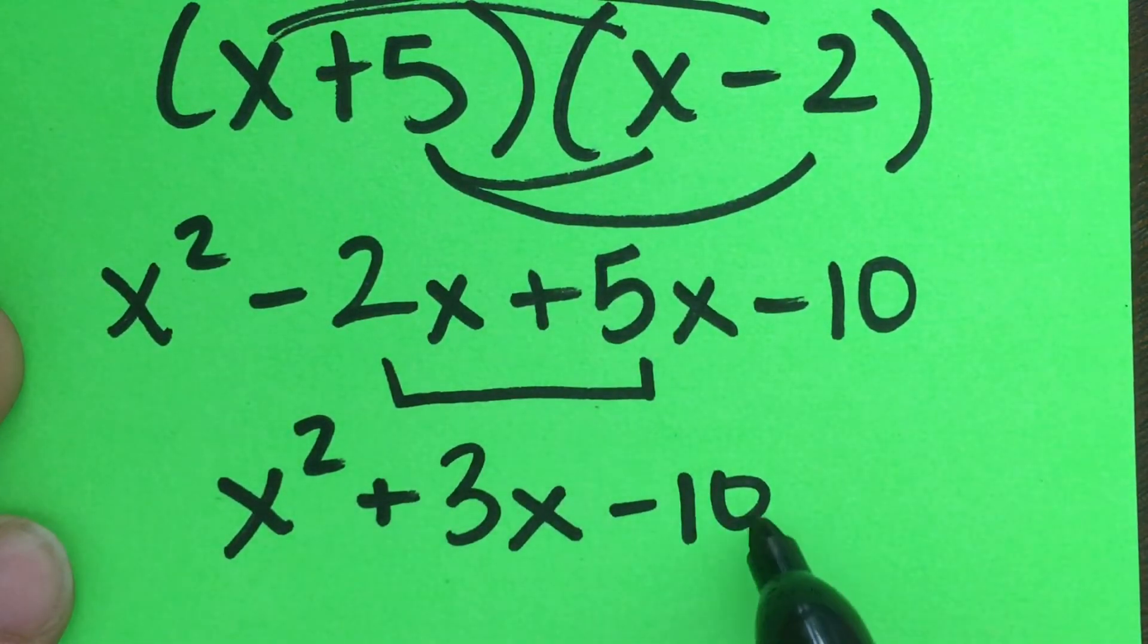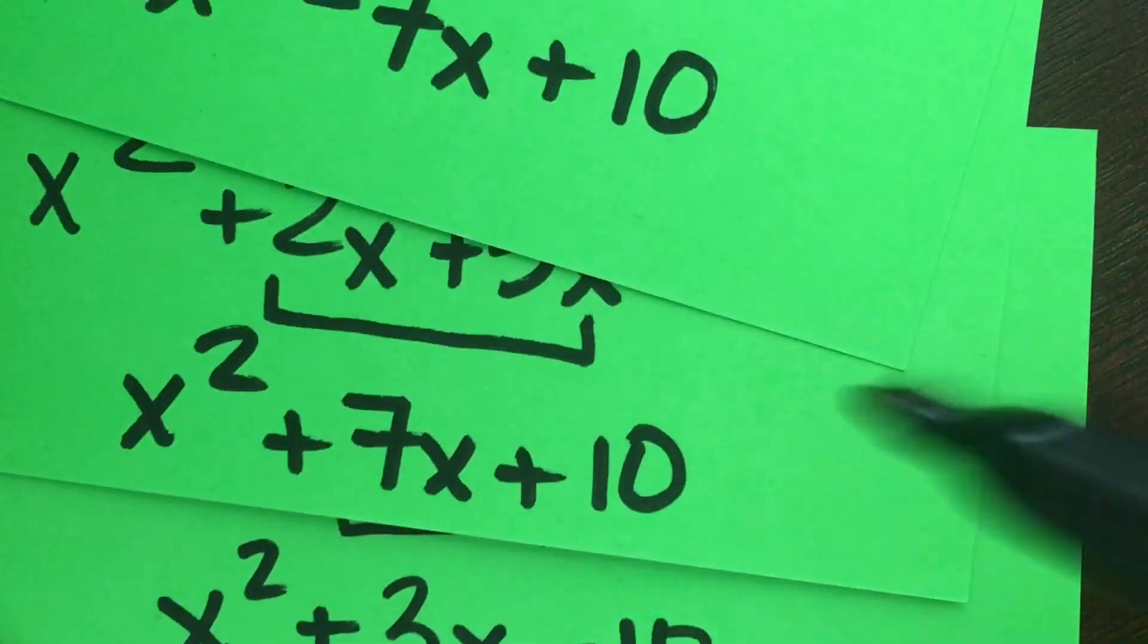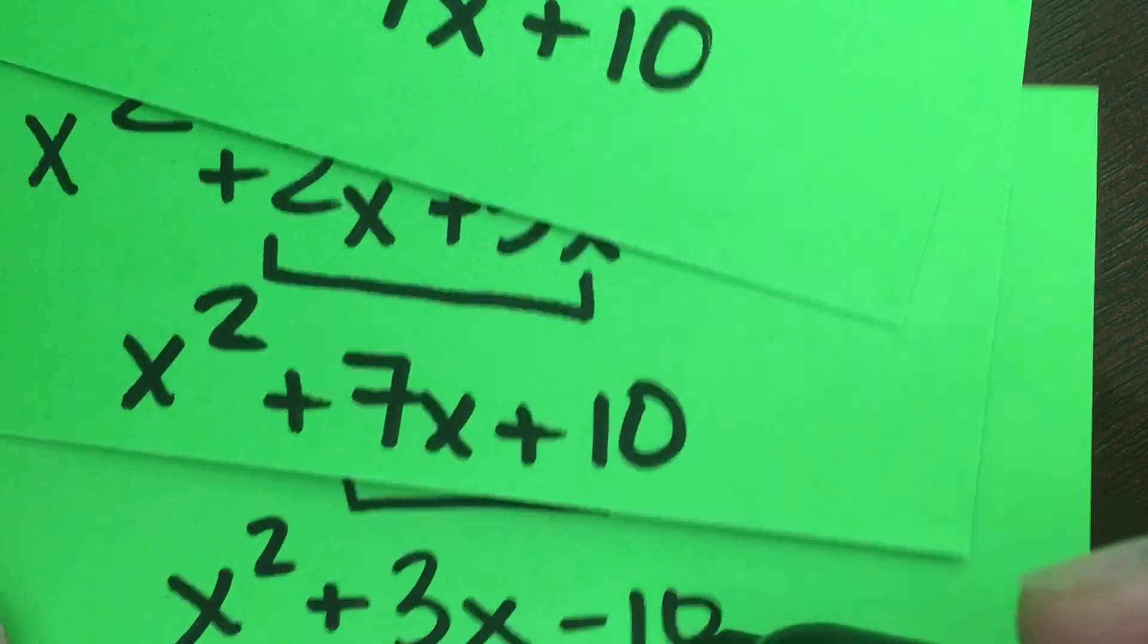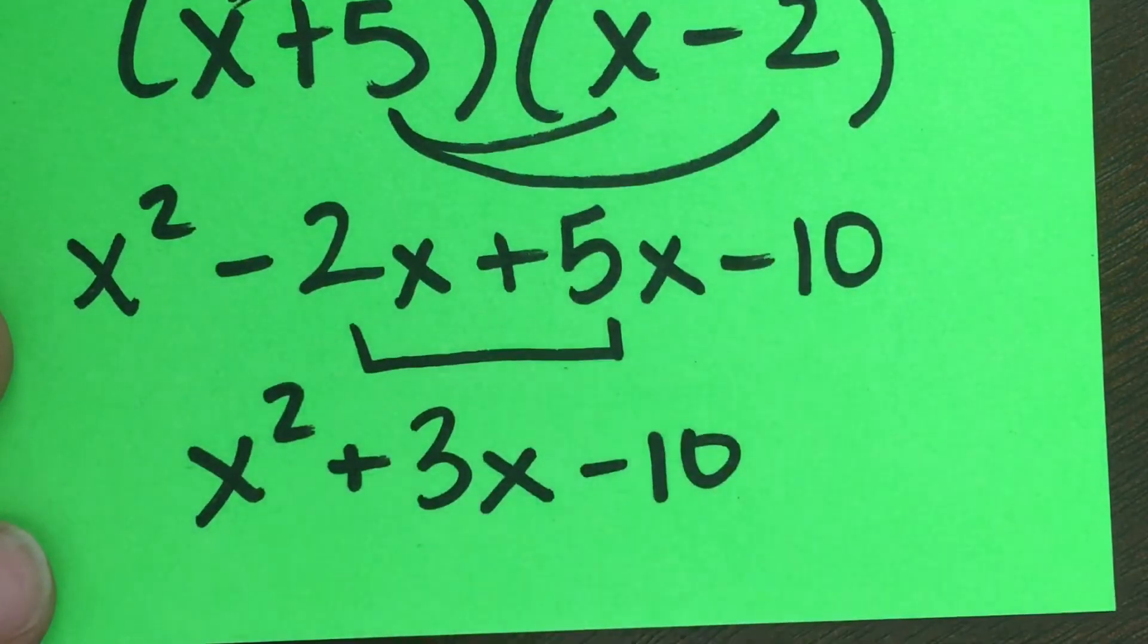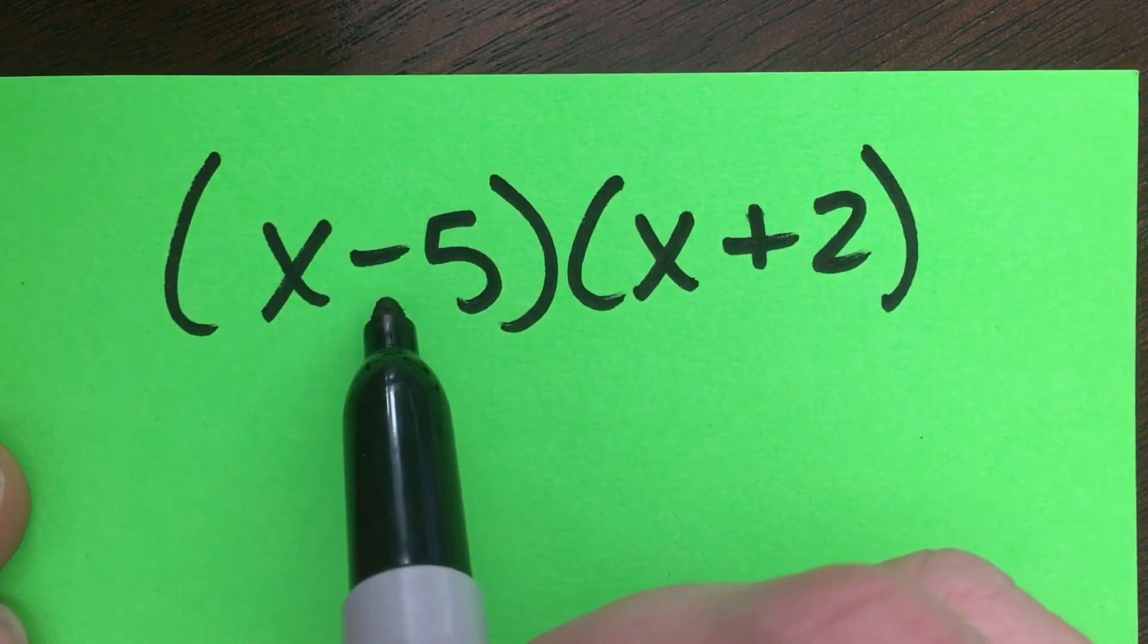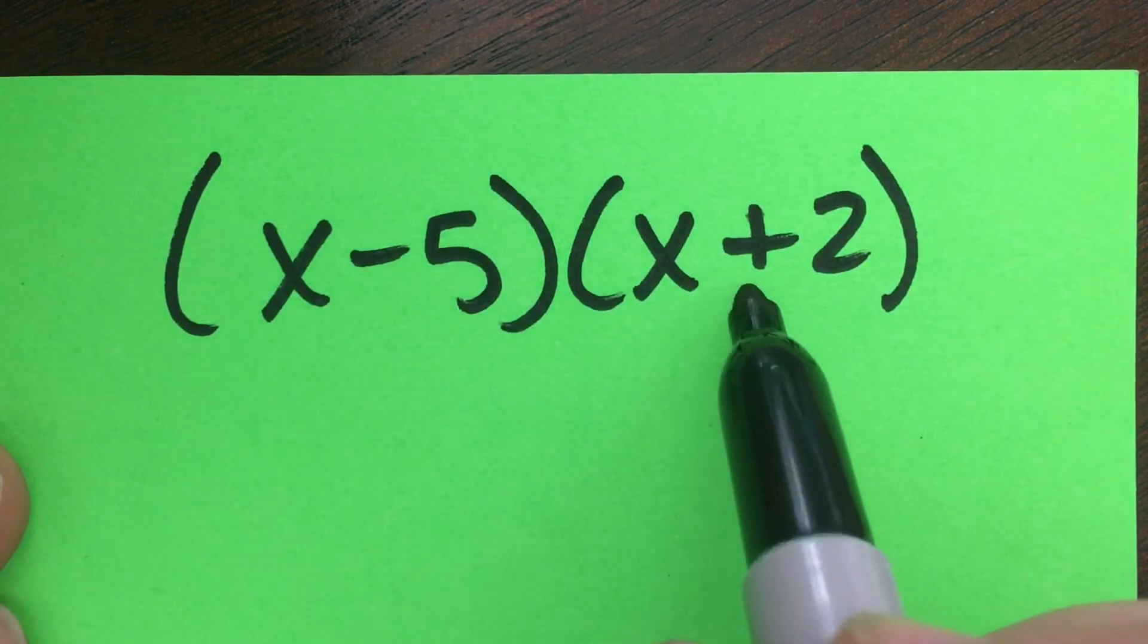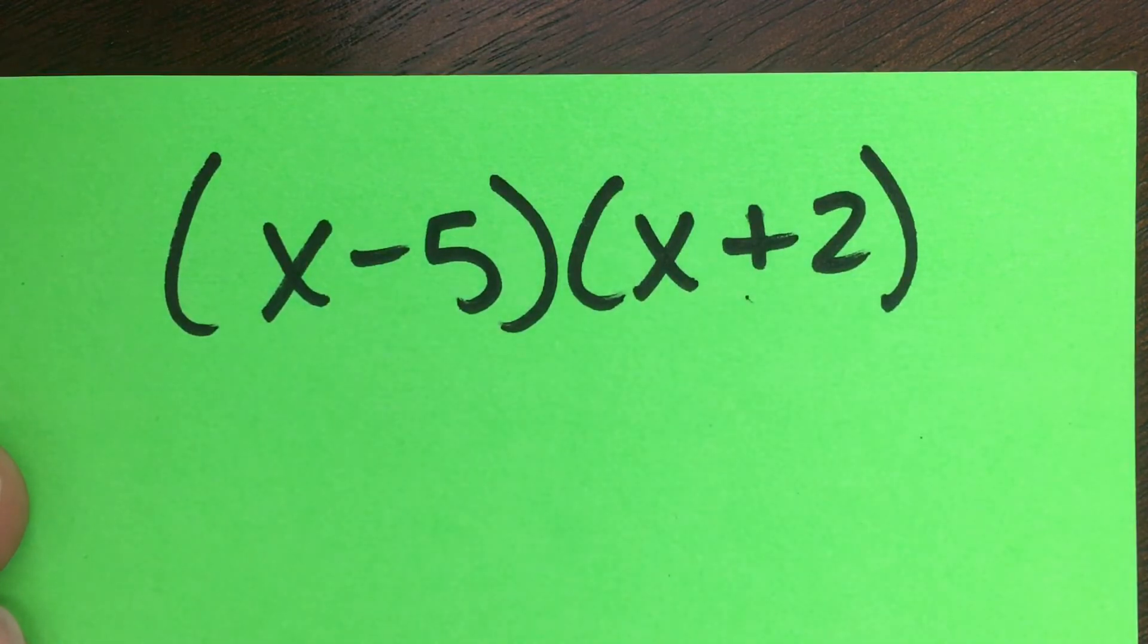So this is a way where you see in the family of problems, we're getting 10 as the common last number. However, we've seen a negative 7, a positive 7, and now a positive 3x. The last one in this family is, again, where one's positive, one's negative. But this time, the first grouping has a negative and the second grouping has the positive.